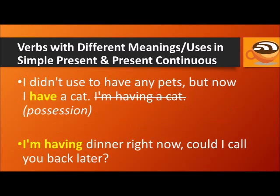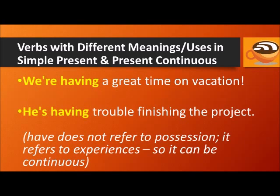For example: I didn't used to have any pets, but now I have a cat — don't say "I'm having a cat," because have in this sentence refers to possession. But you can say: I'm having dinner right now — could I call you back later? We're having a great time on vacation. He's having trouble finishing the project. In these cases, have does not refer to possessing a physical object.